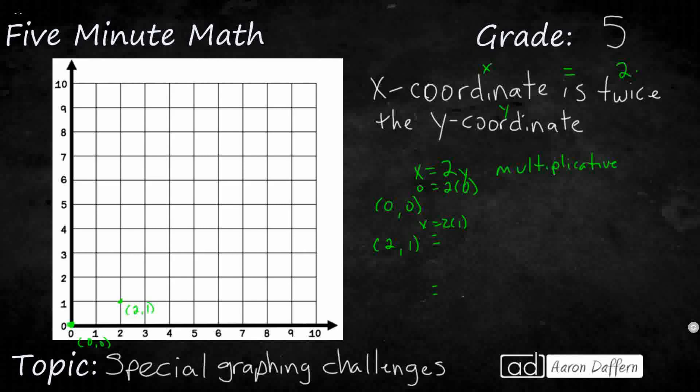If the y value is three, then x equals two times three, which is six. So we have an x value of six, y value of three. Hopefully you see this pattern - we could draw a line connecting these points.